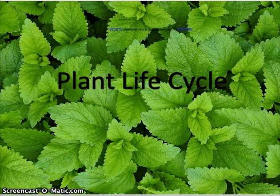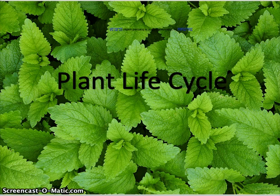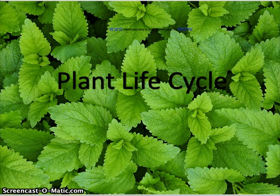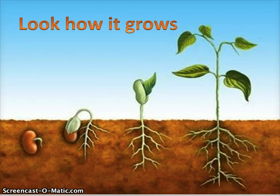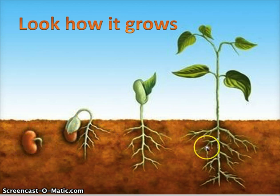Hello second grade and welcome to today's science lesson. Today we are talking about the plant life cycle, which basically means the stages a plant goes through — how does a baby plant grow into a full-grown adult? We're going to look at this first picture, which is a cutaway scene of under the ground. Think back to what you may have learned in first grade — do you know the names of all these stages?